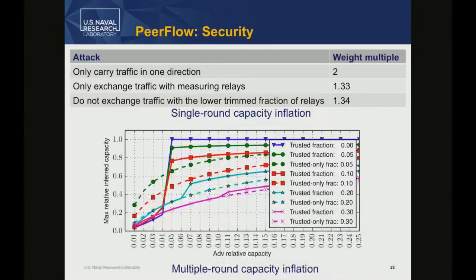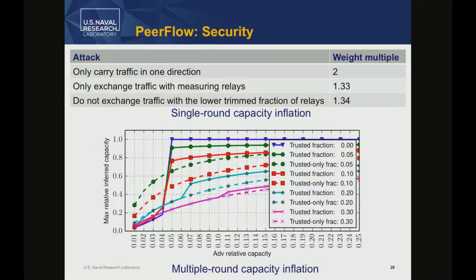A second graph shows how the inflation proceeds over time due to a feedback effect: increasing weight slightly gives more voting power, allowing slightly more weight increase, and so on. Sometimes this peters out if you start small, but sometimes it can run away unless we apply the trusted relay ceiling and floor. The graph shows where the process ends up: X-axis is actual starting capacity, Y-axis is the maximum achievable inflated weight. We compare our full system against a simpler trusted-relay-only baseline. The key advantage is that PeerFlow has no obvious flaw allowing an adversary to kick out every other member of the network, as prior solutions did.